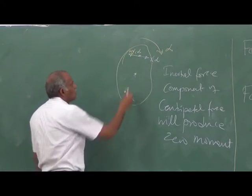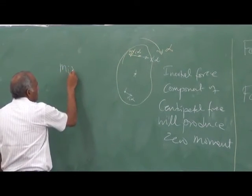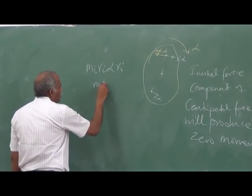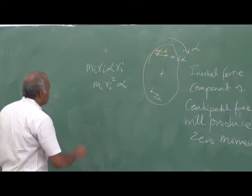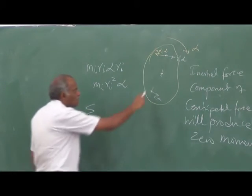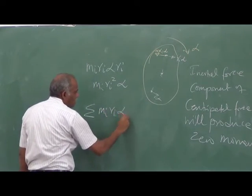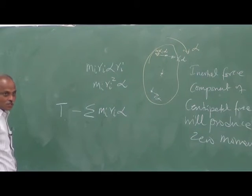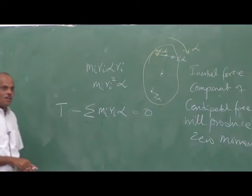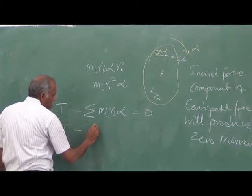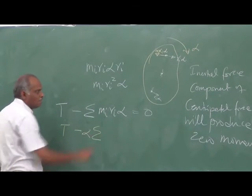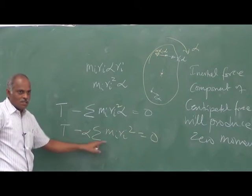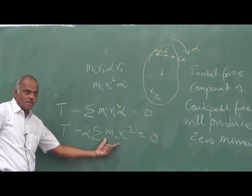The moment of the inertial force from tangential acceleration is: mi times Ri times alpha, multiplied by the distance Ri — giving mi times Ri squared times alpha. Taking the sum over all particles: T minus the sum of mi Ri squared times alpha equals zero. Since alpha is common for all particles: T minus alpha times the sum of mi Ri squared equals zero. This leads to moment of inertia — T minus I times alpha equals zero.